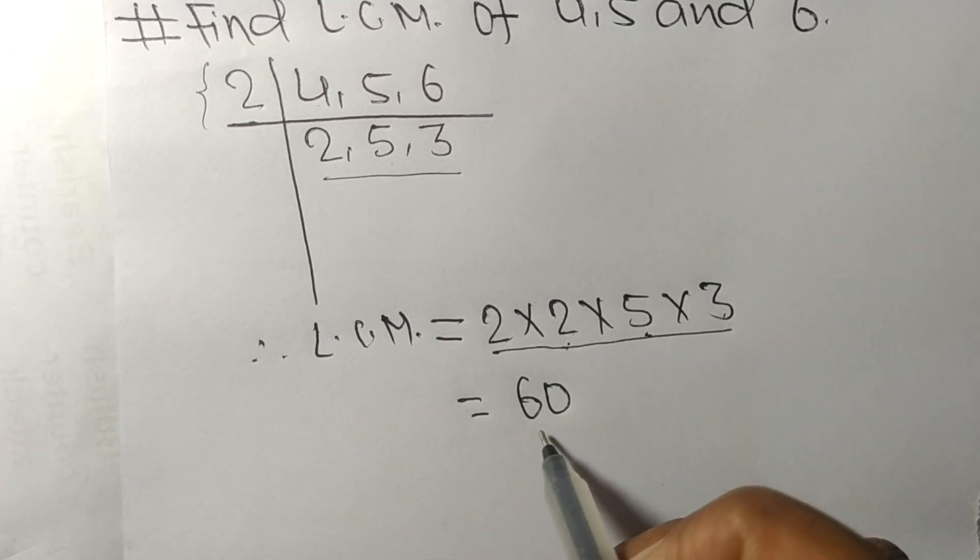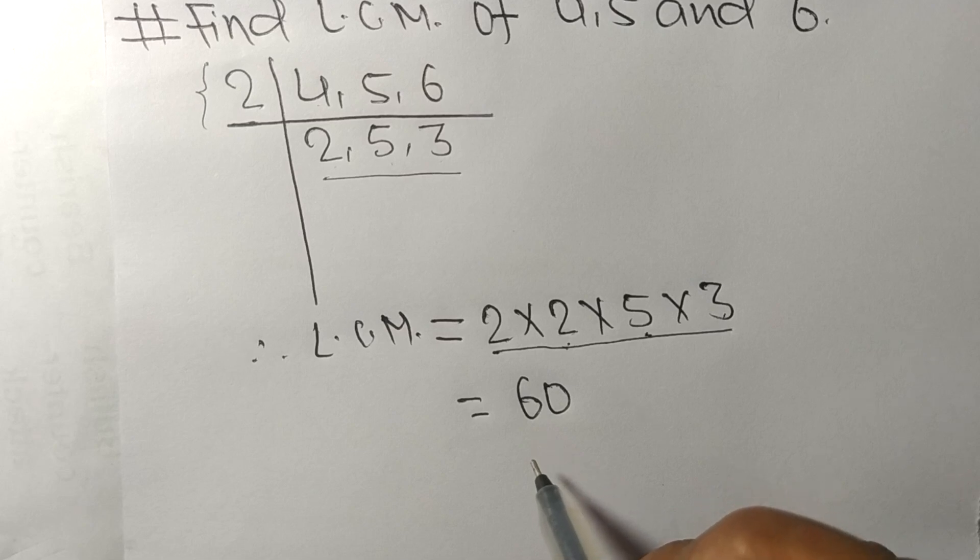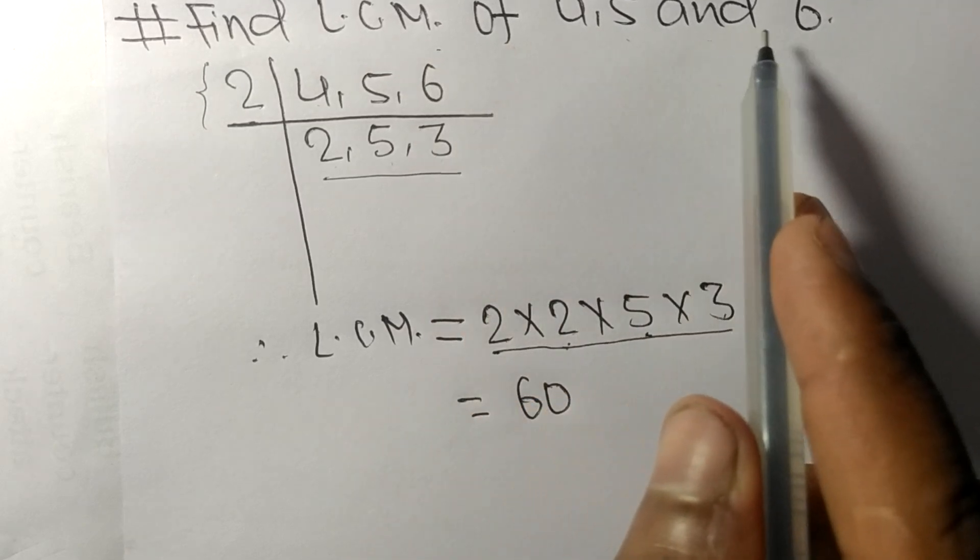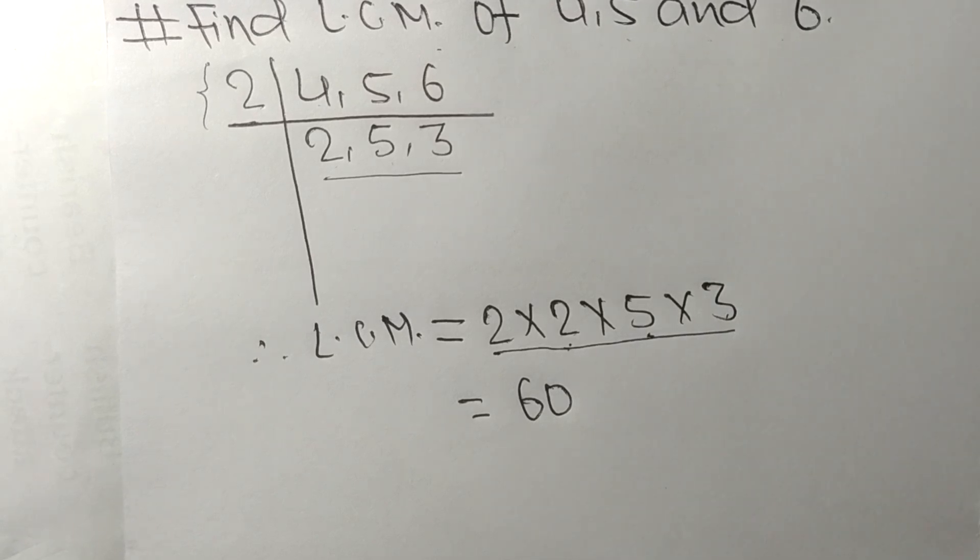numbers we got 60. So 60 is the LCM of 4, 5, and 6. That's all for today. Thanks for watching!